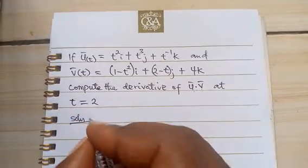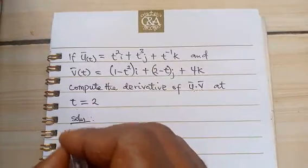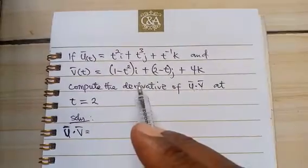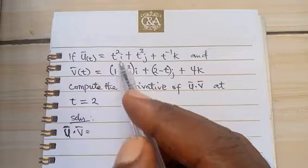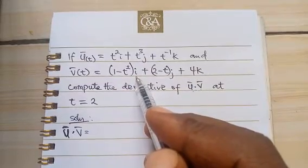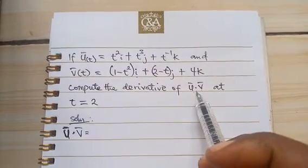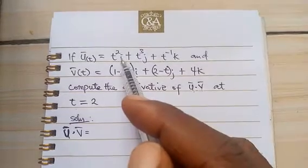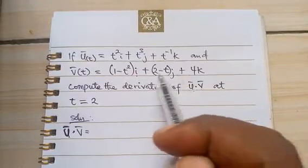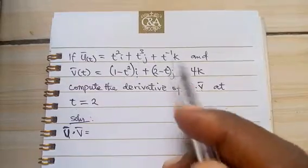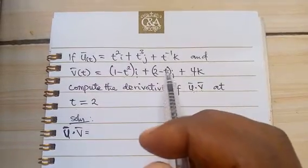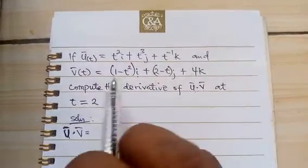Okay so if we are to solve we first of all begin with vector u dot vector v. One thing you need to note when multiplying is that whenever i is dotting i that is equal to 1. That's why dot product is also known as scalar multiplication of vectors. So whenever i is dotting any other product other than i it is equal to 0. So we're only going to do i and i, j and j, k and k. Because when j is dotting any other thing other than j it will be 0. When k is dotting any other thing other than k it is 0.